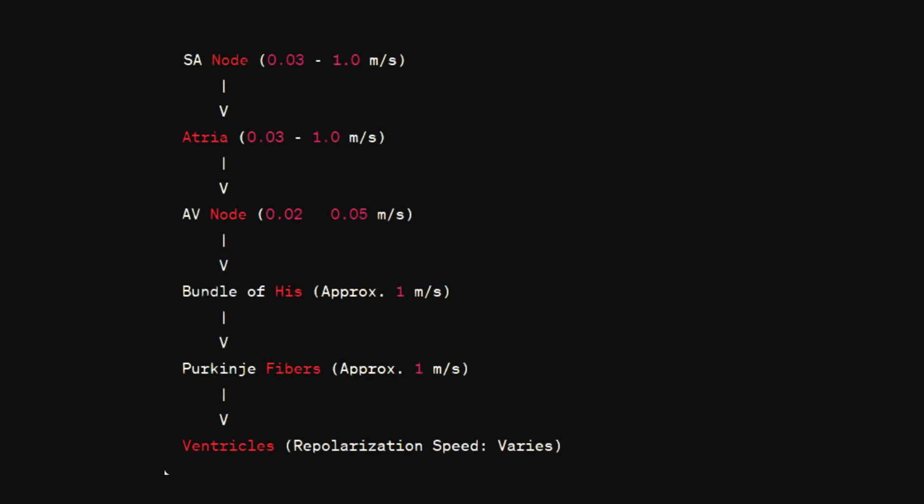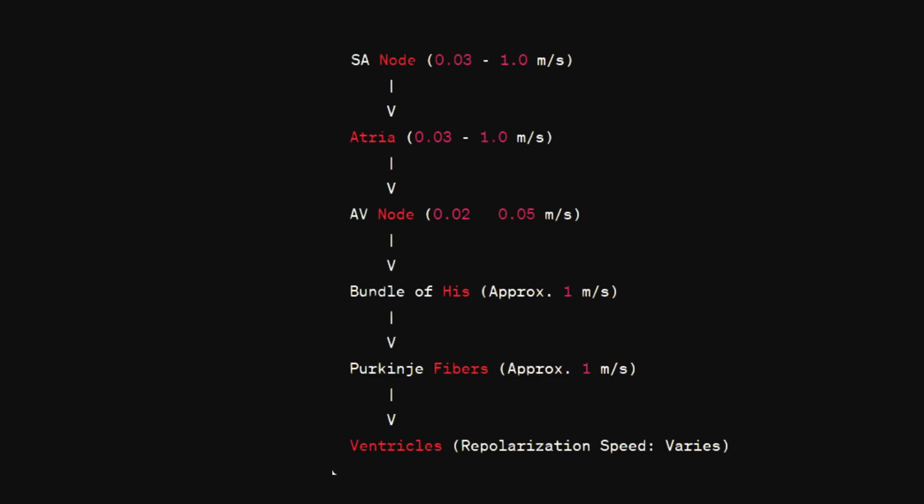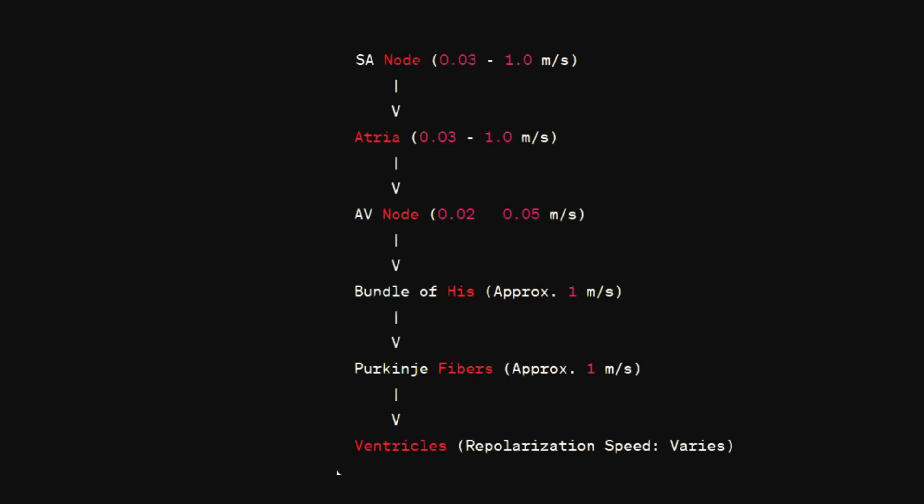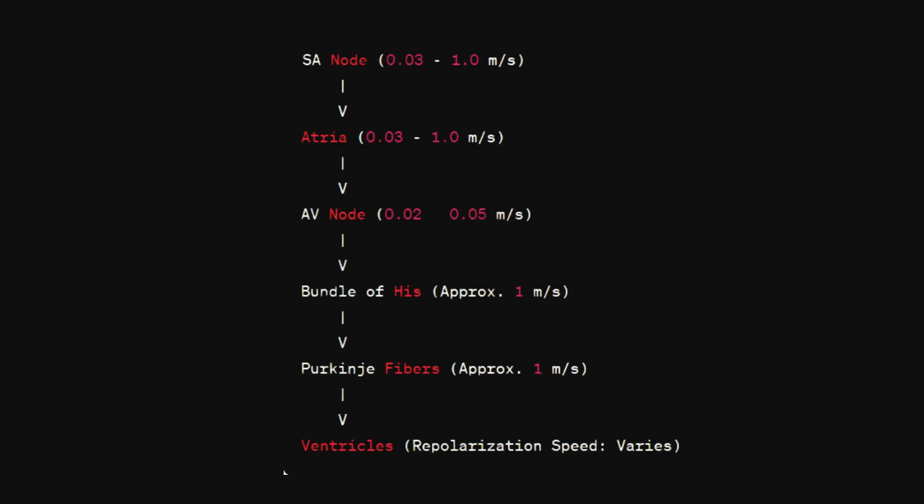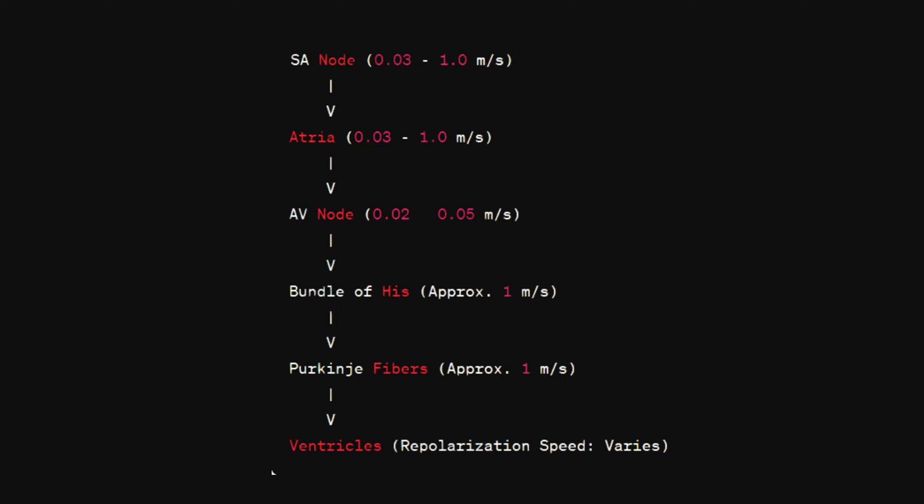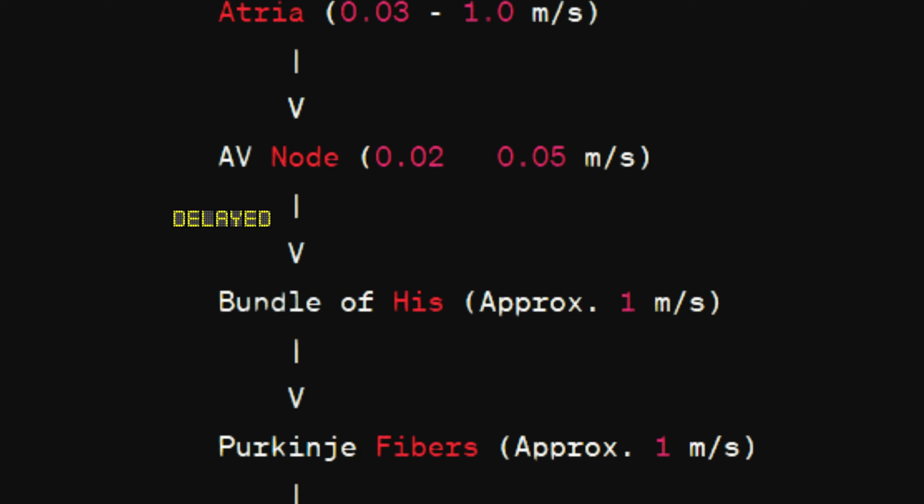What happens if this rhythm goes off track? What if the signals in our heart are delayed or speed up for some reason? If signals are delayed, it's like the beat of the music getting out of sync, leading to problems like feeling faint or dizzy. For instance, if the AV node delays the signal too much, it can cause heart block.